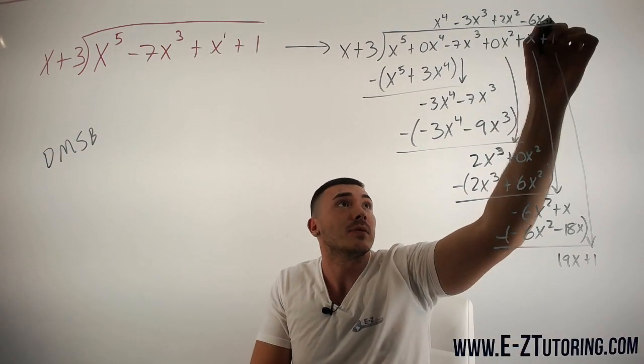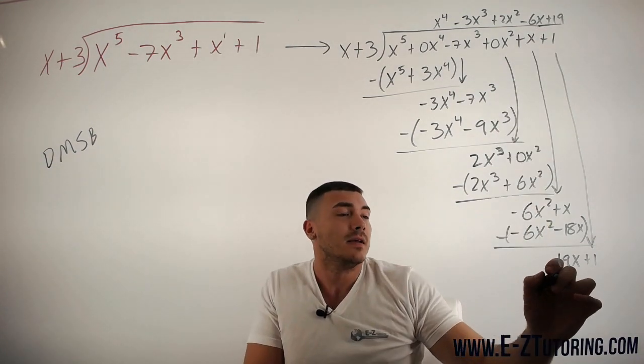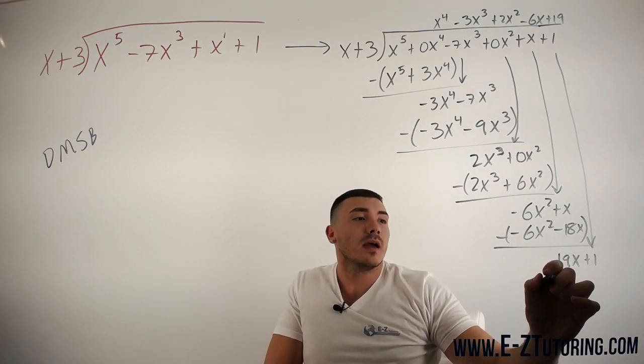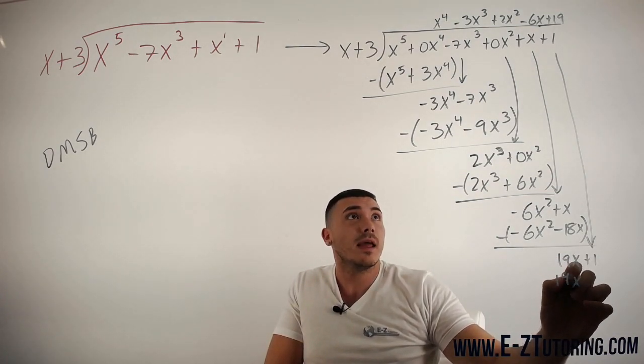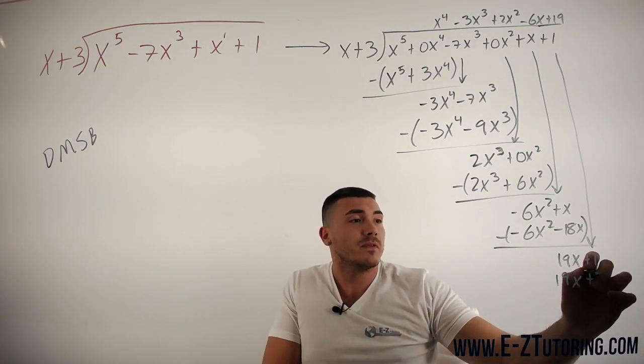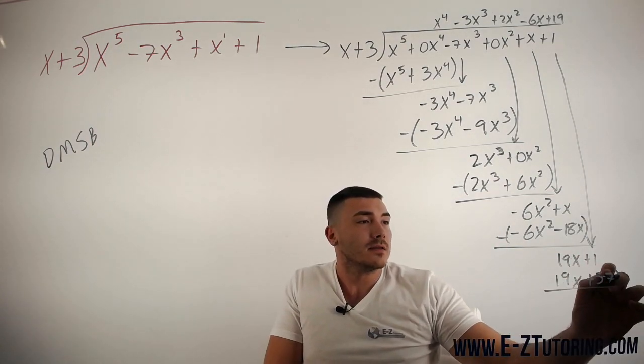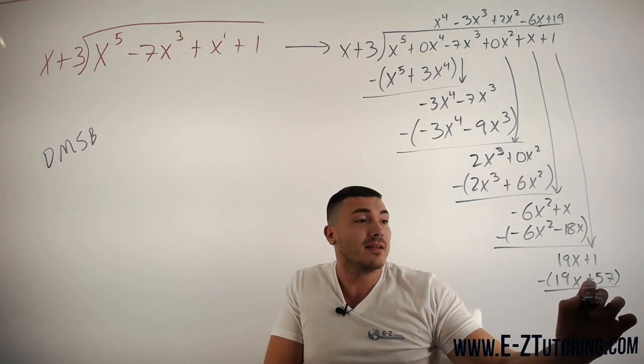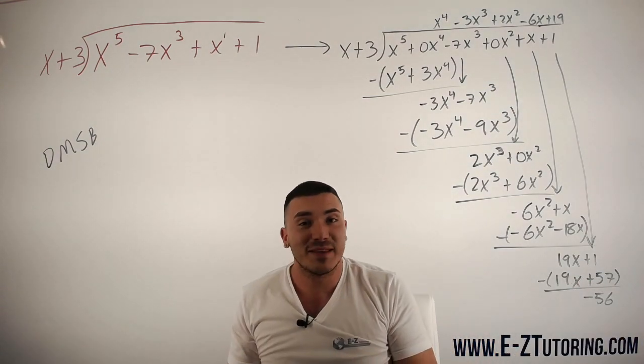Divide this, plus 19. And we get plus 19x, and that times 3 is what? 57. Subtract all this and we get negative 56 where we have a remainder of negative 56.